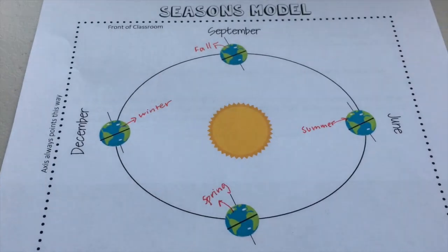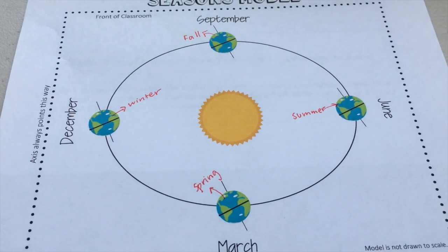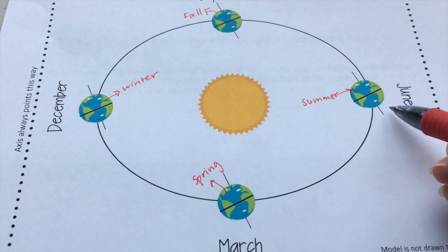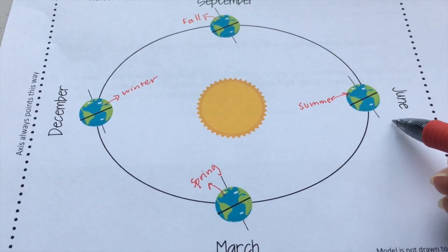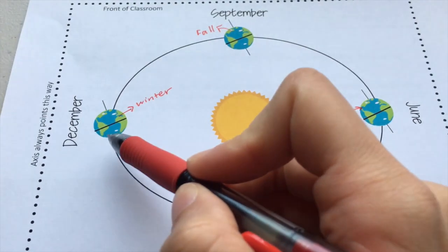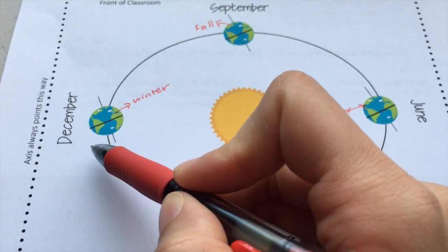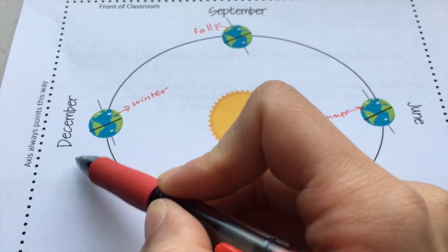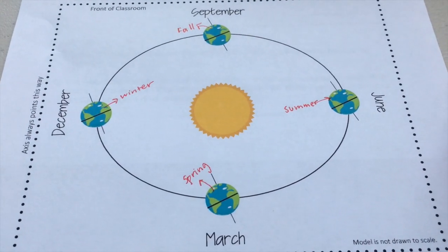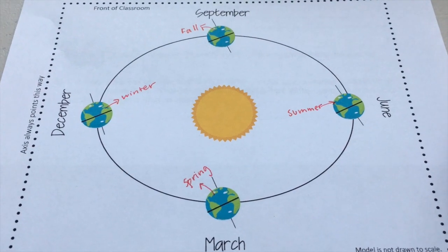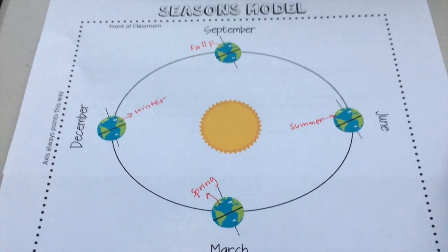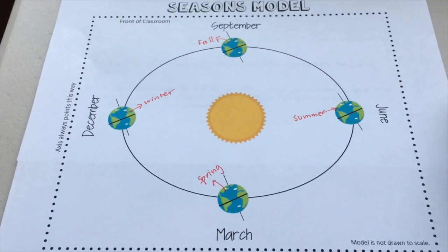Here is my completed diagram. You could also have students add an arrow for the southern hemisphere showing winter and summer at the appropriate positions. You could also have them add more details about the tilt and light intensity in the diagram if you want to.